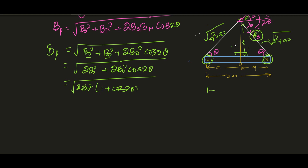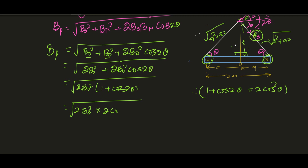In trigonometry, 1 + cos2θ = 2cos²θ. Therefore we use that identity here: √(2B0² · 2cos²θ) = √(4B0²cos²θ). The square root of 4 is 2, the square root of B0² is B0, and the square root of cos²θ is cosθ. So the result is BP = 2B0·cosθ. Let this be equation 1.